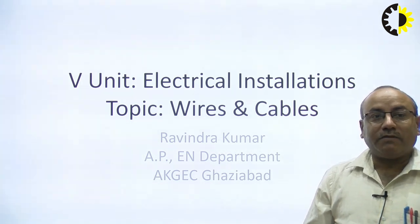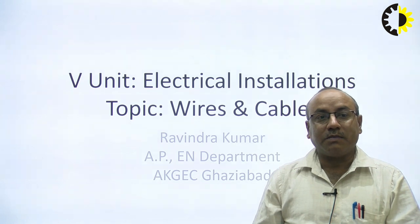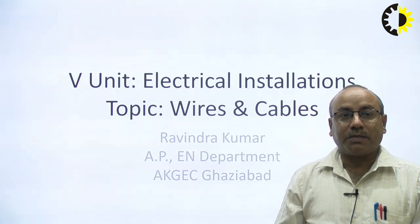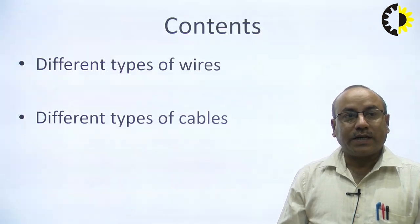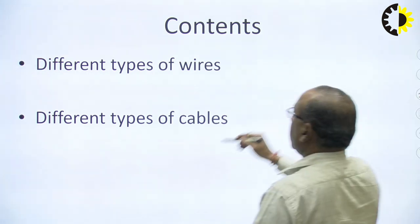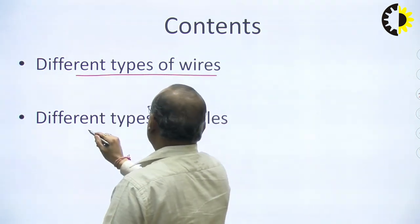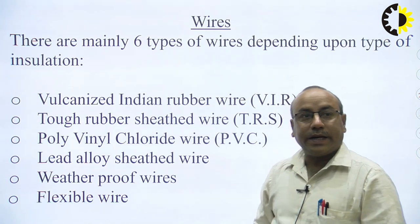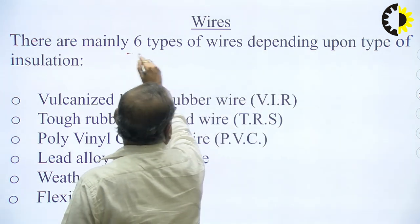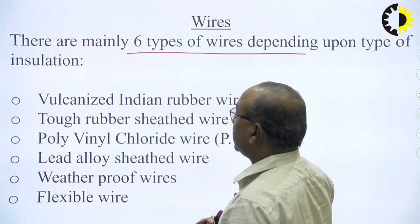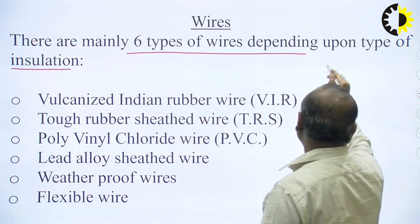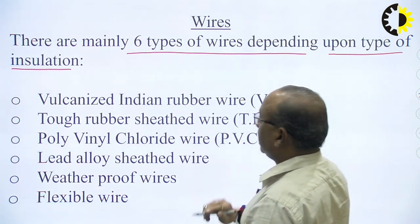Under this topic, I will be covering various types of wires and cables, their usage, where they are used, and how to select those wires and cables as per the use. We will discuss different types of wires and different types of cables. In wires, there are basically six types, and that depends upon the type of insulation over the wire. We name the different types of wires on the basis of the insulation which is put over the wire.